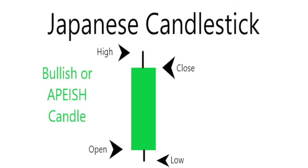This is a Japanese candlestick — this is a bullish one. The open is at the bottom of the green real body, the close is at the top of the green body. The high is the candle wick up top, showing how high the price went in that time frame, and the wick on the bottom is the low. Open and close, high and low — pretty easy.